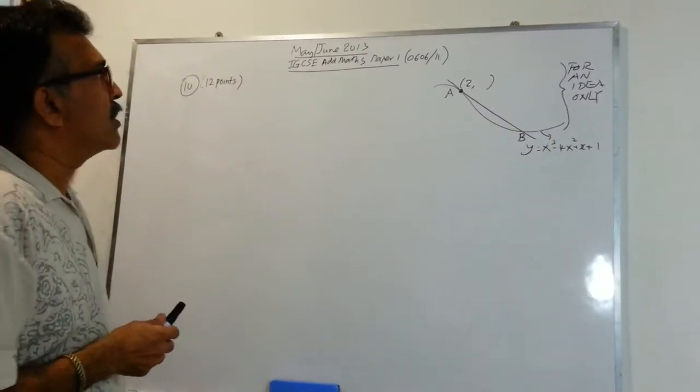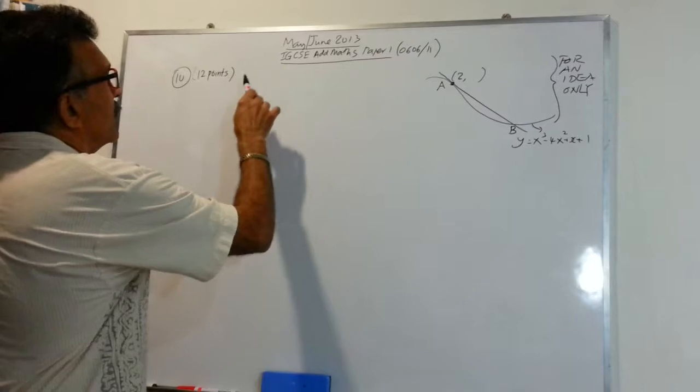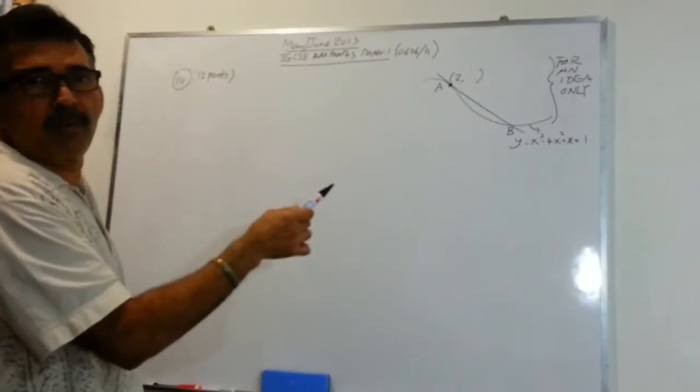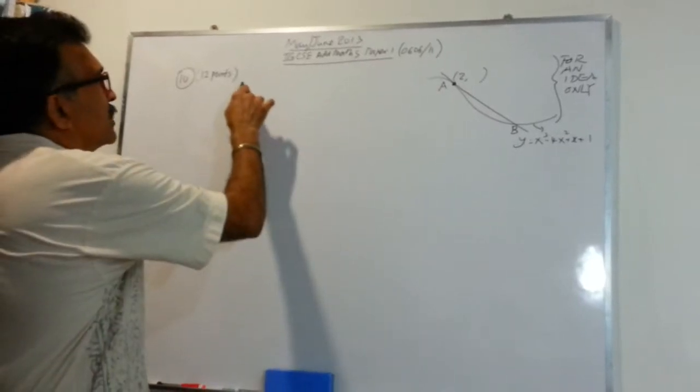We are given a curve. I've drawn a little picture on the right-hand side, just to give an idea what this problem involves. Let's start slowly.